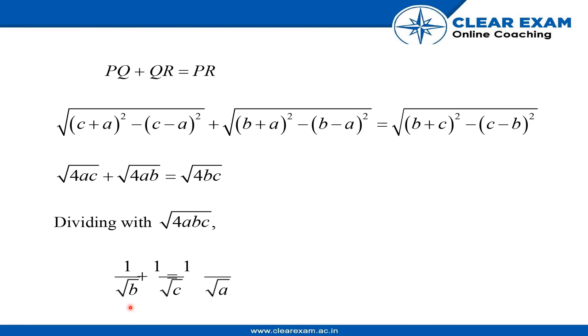We will get 1 by under root B equals 1 by under root A plus 1 by under root C. So option 4 will be correct.